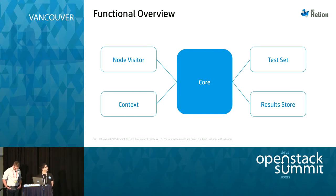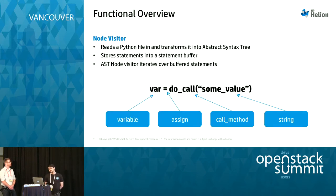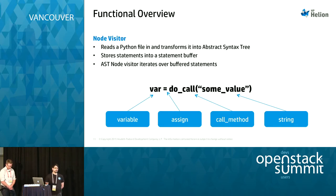Within the core, the most interesting components are the node visitor, the context, the test set, and the result store. Essentially, what Bandit does is take Python source code and transform it into an abstract syntax tree. To do this we use the built-in AST module, which exposes the interpreter's own compiler mechanisms to user space. So we can be confident that anything that is valid Python will produce a valid AST that we can analyze — no matter how complicated the code is.